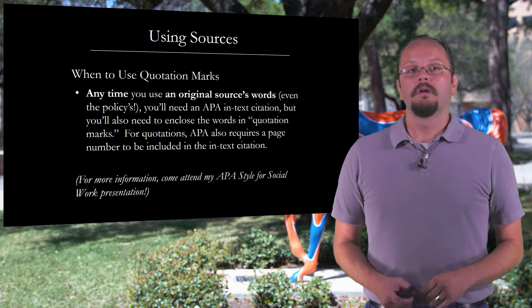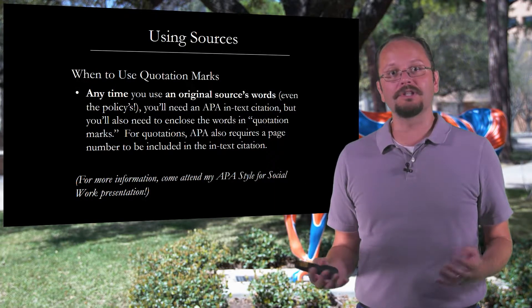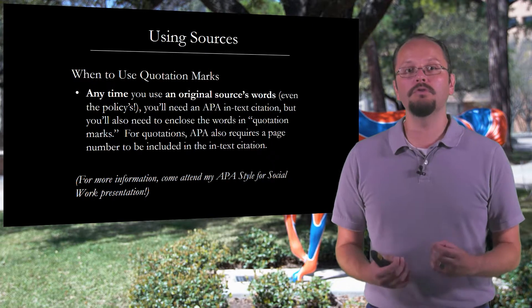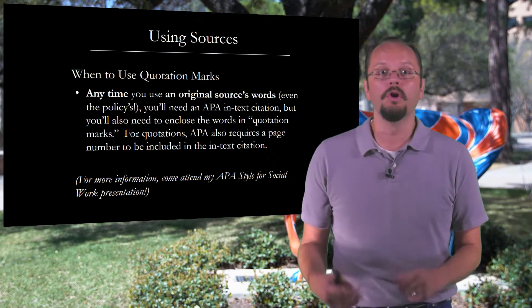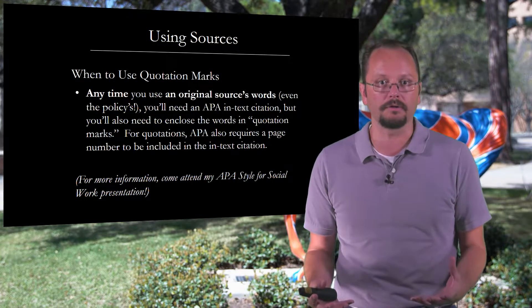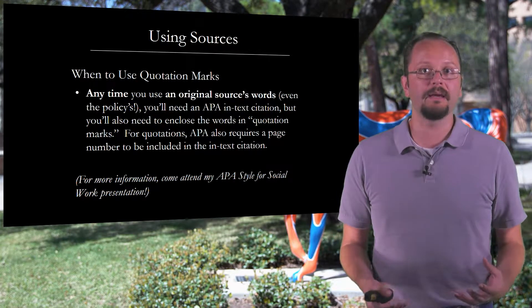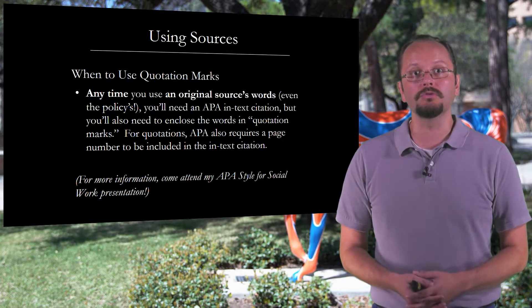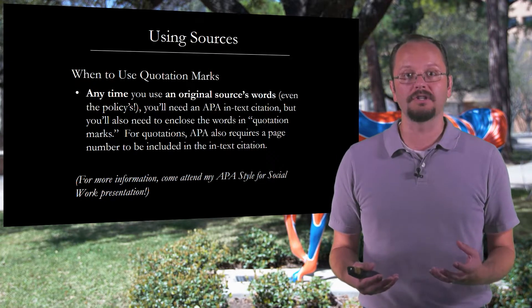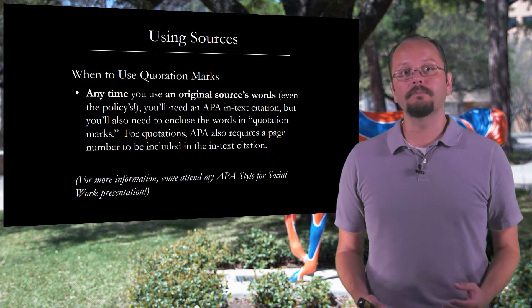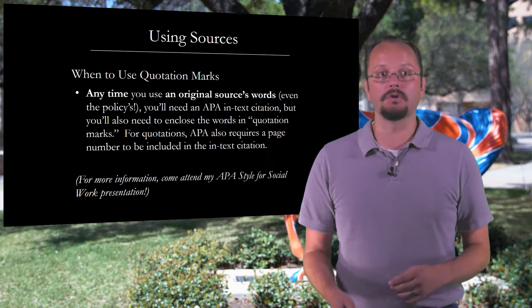A second important point: it's important sometimes to do more than just provide an in-text citation. Anytime you use an original source's exact words — even the policy itself — you'll need an APA in-text citation, but you'll also need to enclose those words in quotation marks. For quotations, APA also asks us to include a page number to identify where in the source that came from. If you've got no page numbers, there are a couple of other methods we can use. The most important thing to remember is that when you use the original source's words, you need an APA in-text citation and you need to enclose the words in quotation marks.